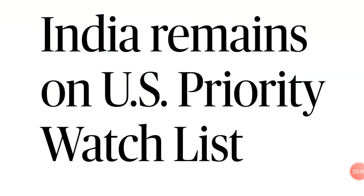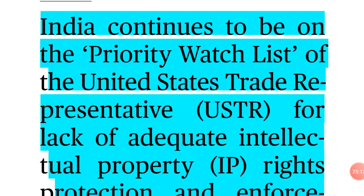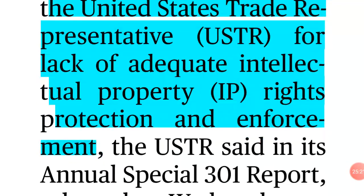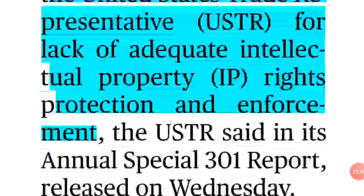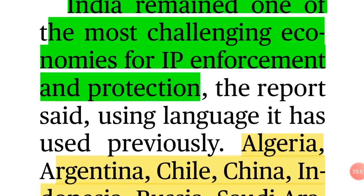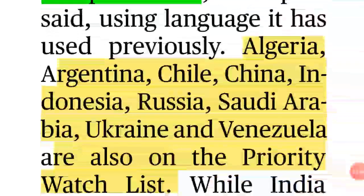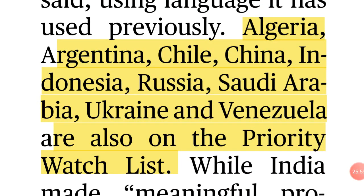Coming to the next article: 'India Remains on US Priority Watch List.' India continues to be on the priority watch list of the United States Trade Representative for lack of adequate intellectual property rights protection and enforcement. The crux is ongoing trade issues between India and the US, mainly due to intellectual property rights — patents, trademarks, etc. Other countries on the list include Algeria, Argentina, Chile, China, Indonesia, Russia, Saudi Arabia, Ukraine, and Venezuela.